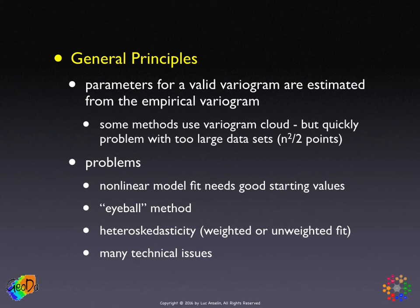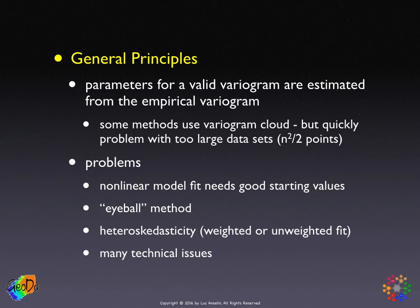Some methods are based on a variogram cloud, but these tend to be problematic. For one, very quickly the size of the data set becomes very large because it includes all the unique pairs. Also, the variogram cloud tends to be dominated by points at larger distances, and the effect of outliers is important, so the fit of the resulting curve is not necessarily that good. Even though it may seem that using more data points gives a better fit, in practice that's actually not the case. So in practice, we go this two-step route where you first get the empirical variogram and then fit the curve.